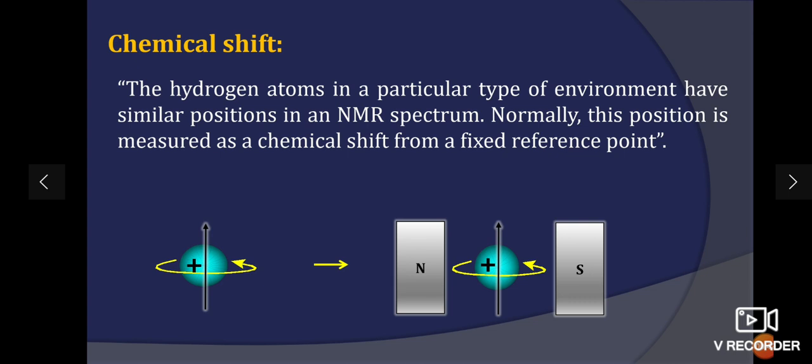These different types of protons have different electronic environment which determines the absorption of proton in the spectrum. If you place a molecule in a magnetic field, the electrons are caused to circulate and while circulating they generate secondary magnetic field which is called induced magnetic field.